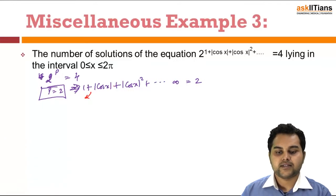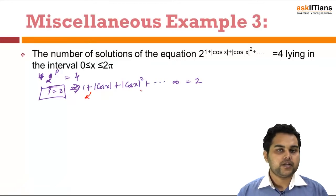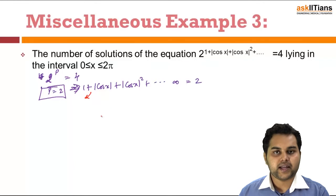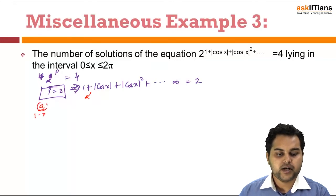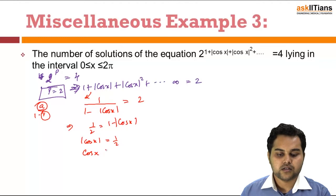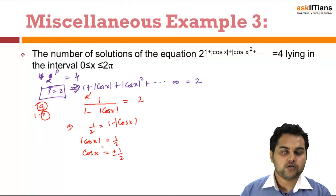This is a geometric progression extending to infinity — it converges because the value |cos x| is less than 1, so increasing powers diminish towards 0. The sum of an infinite GP is a/(1 - r), where a is the first term and r is the common ratio. Here the first term is 1 and common ratio is |cos x|, giving 1/(1 - |cos x|) = 2. So |cos x| = 1/2, meaning cos x = ±1/2.